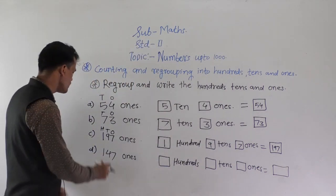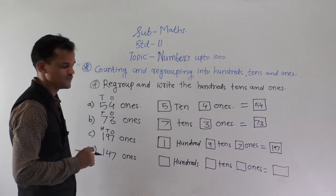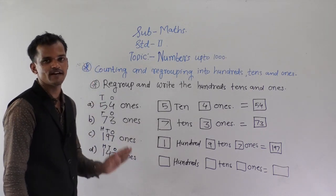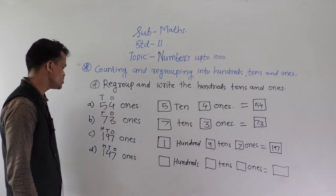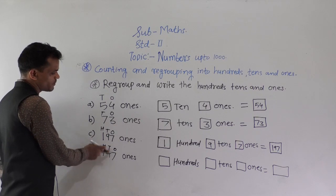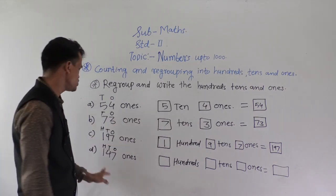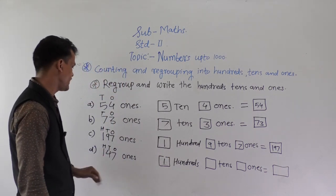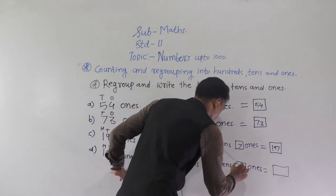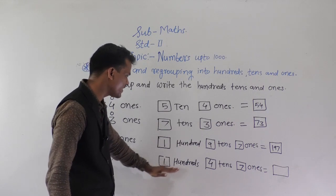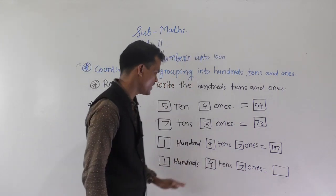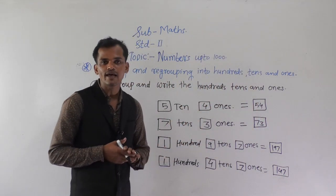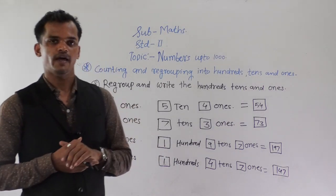See the next example: 147 ones. We have to regroup these into 3 columns — 100s, 10s, and 1s. See the position of each digit: 1 comes at the hundreds place, 4 comes at the tens place, and 7 comes at the ones place. So this number has 1 hundred, 4 tens, and 7 ones. The number formed is 147. Today we have learned the regrouping activity.